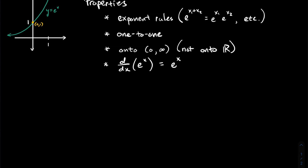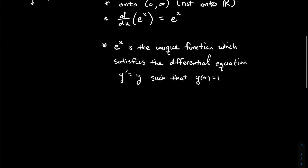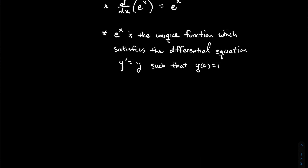It's your favorite function from calculus because the derivative of e to the x is just itself. More precisely, e to the x is the unique function satisfying the differential equation y′ = y such that the y-intercept is at (0, 1). That's the only function that is its own derivative and passes through the point (0, 1).